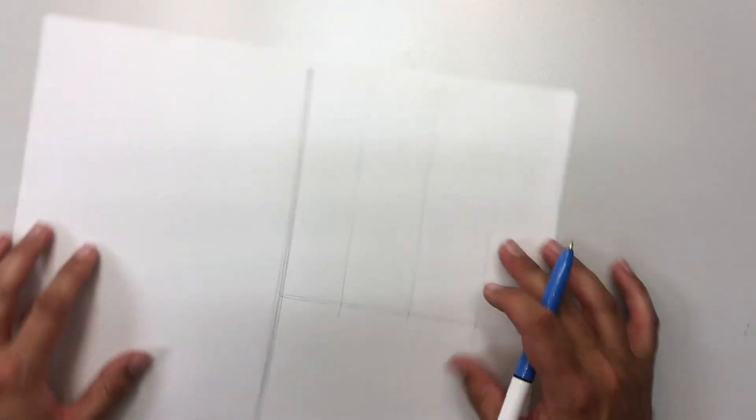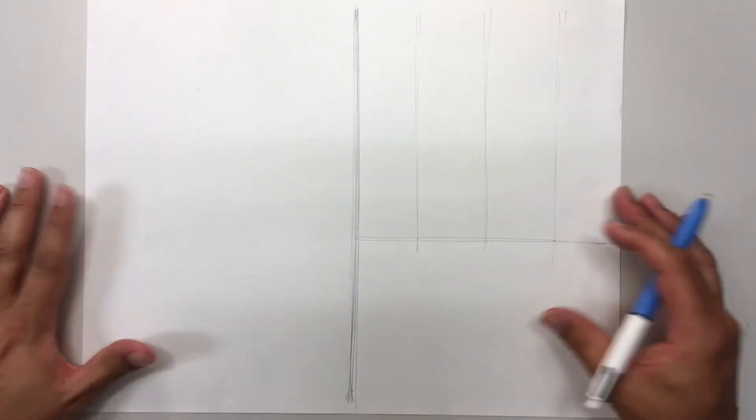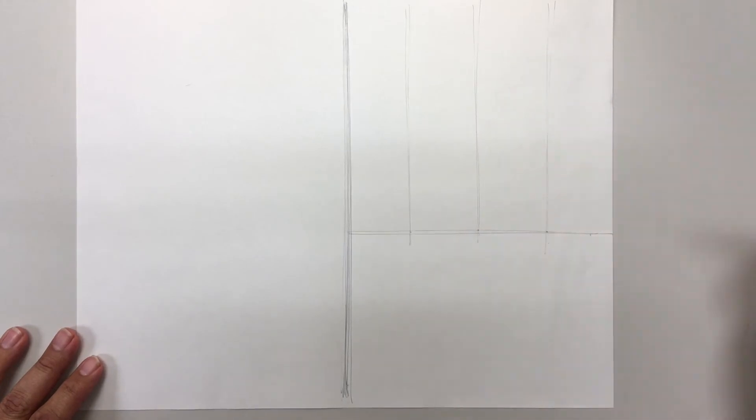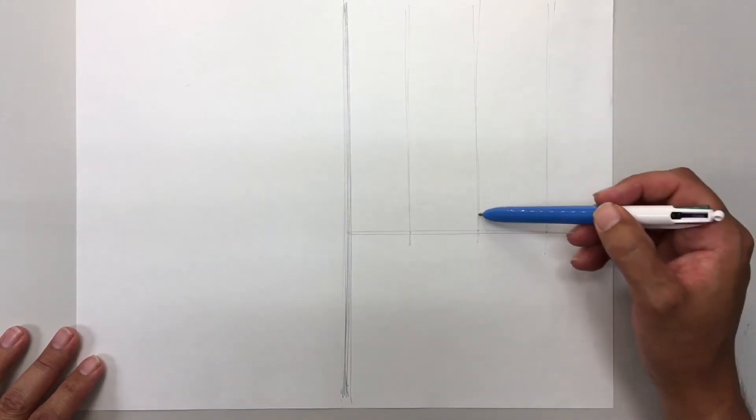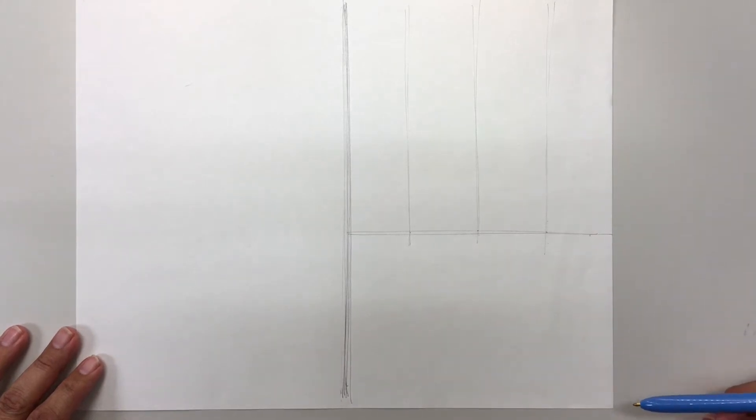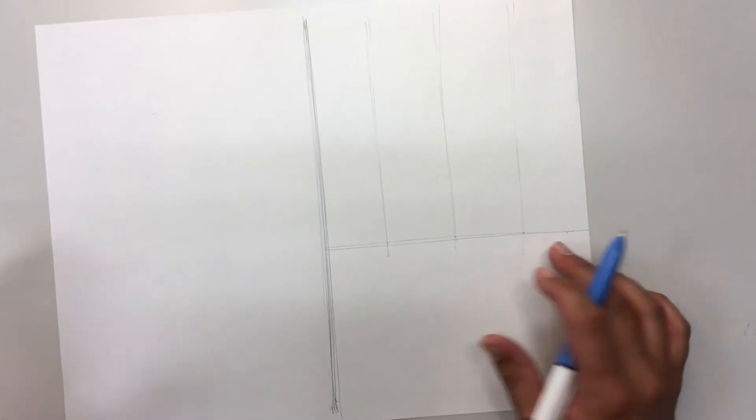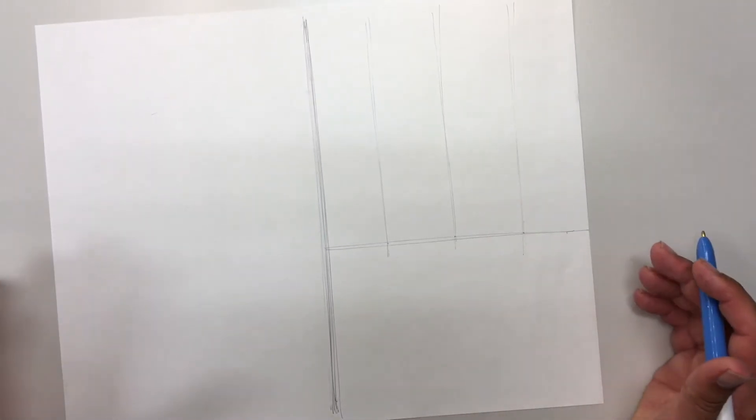So a couple of things that I want you to notice. Here's as far as we've gone. My space is not perfect. My lines are not perfectly straight. I've drawn at least two lines for every line that I have here because I'm correcting it. The other thing I want you to notice is that it's not very dark. This is maybe 30% of how dark I can draw with this pen.